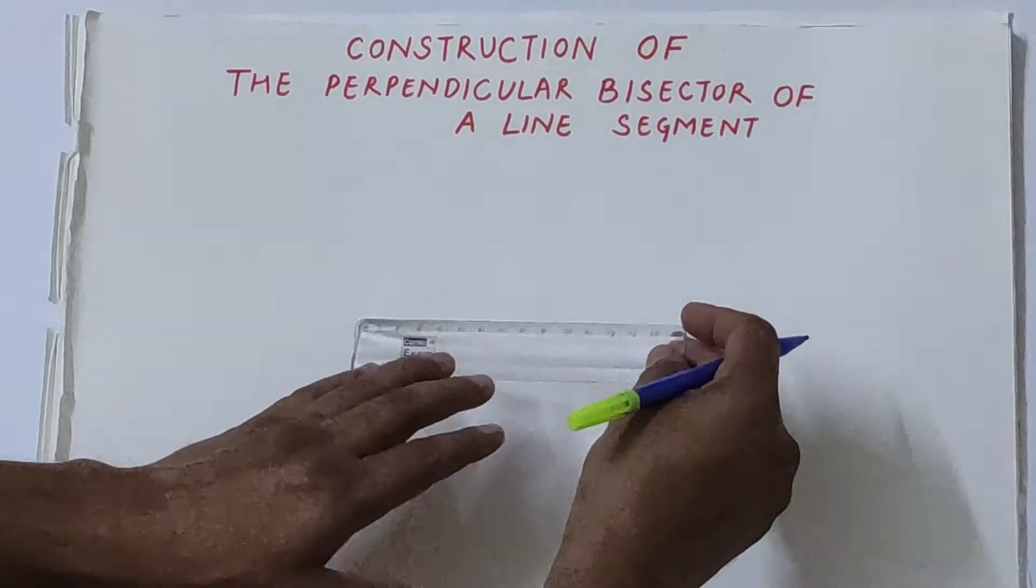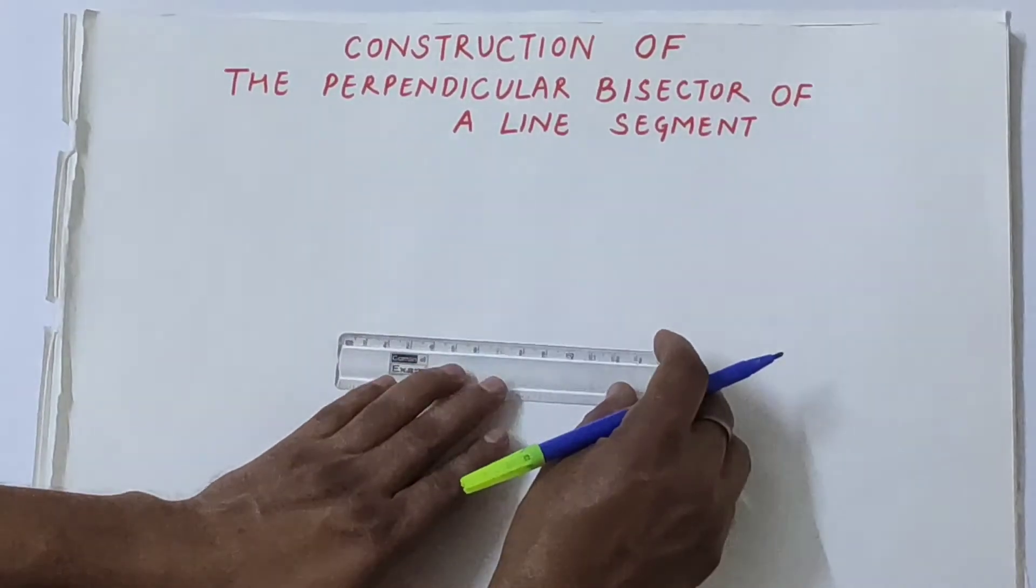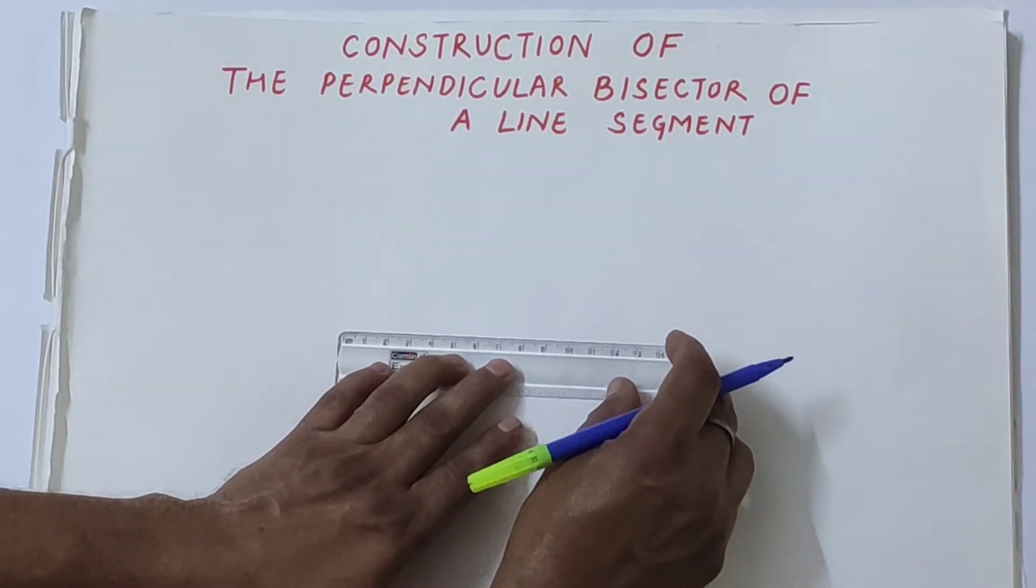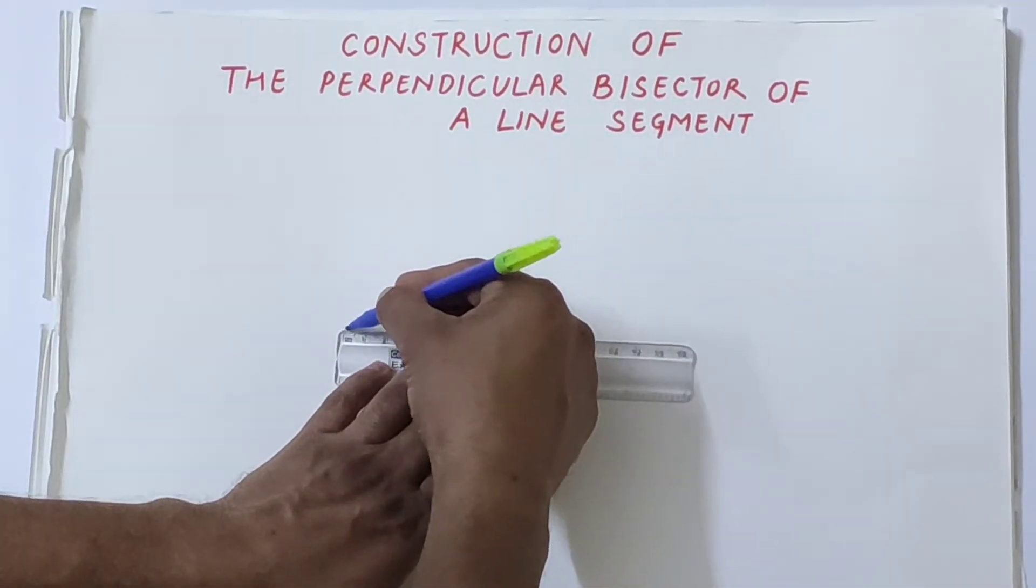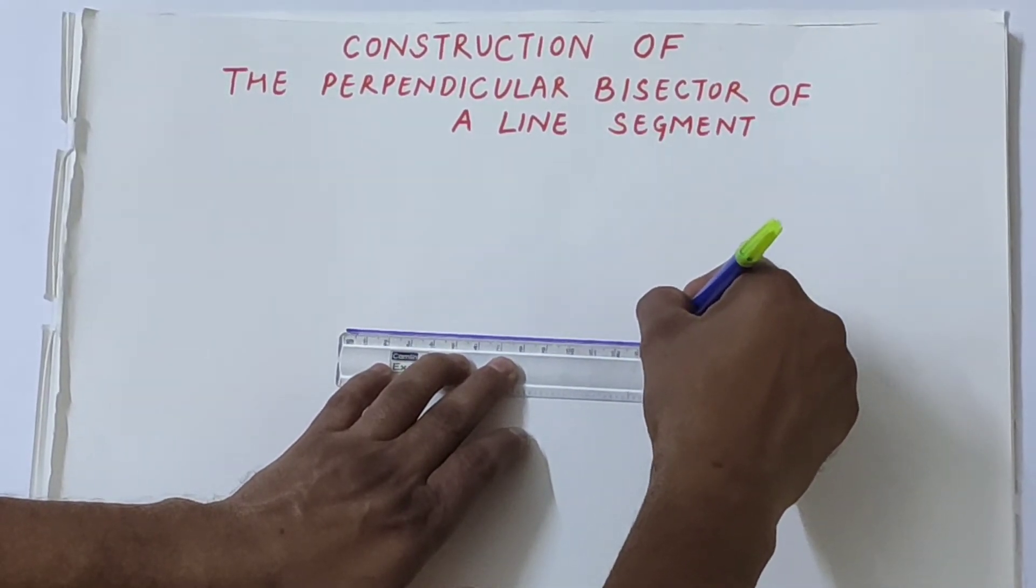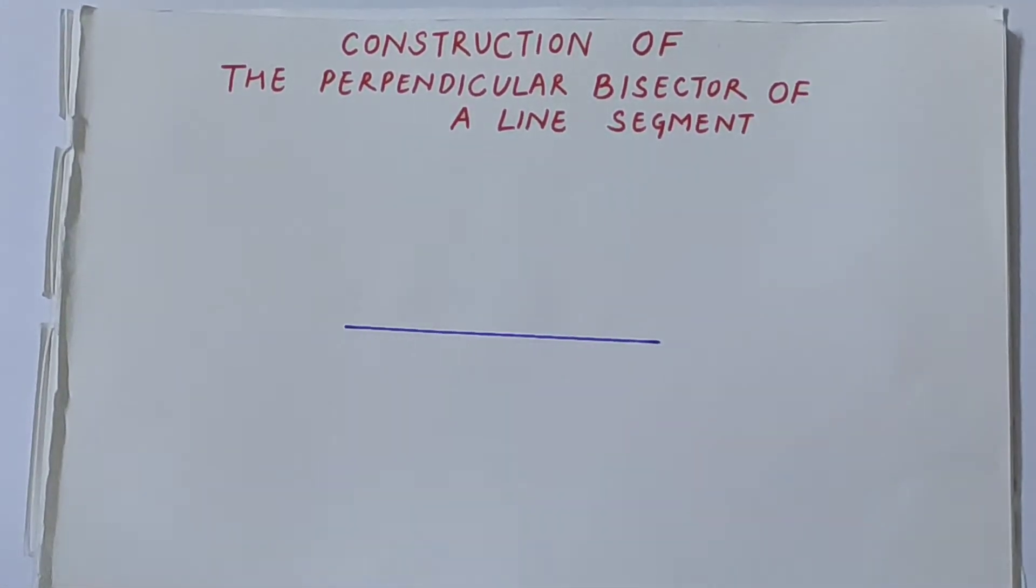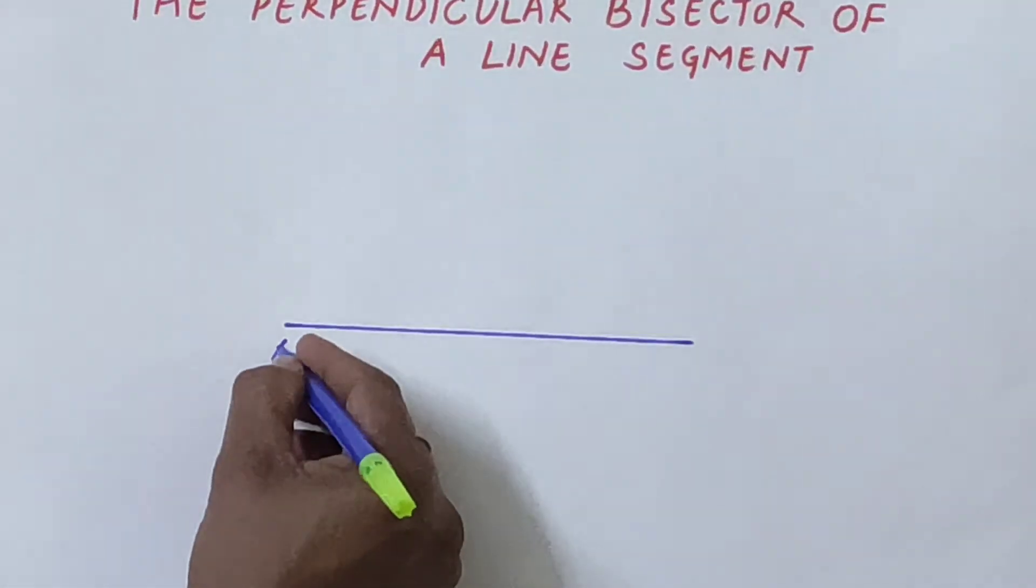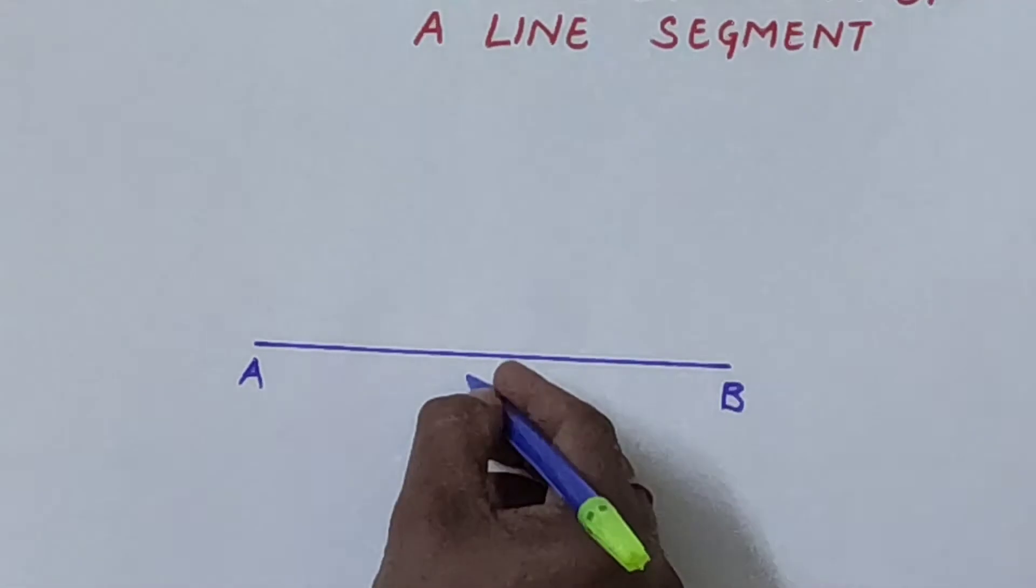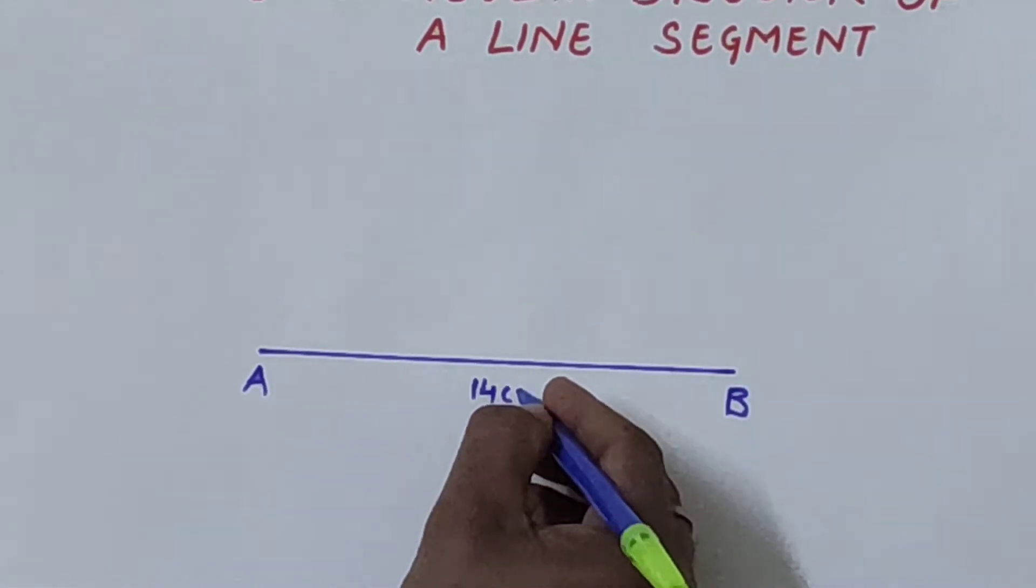First, we will make a segment of length 14 centimeters. It is segment AB of length 14 centimeters.